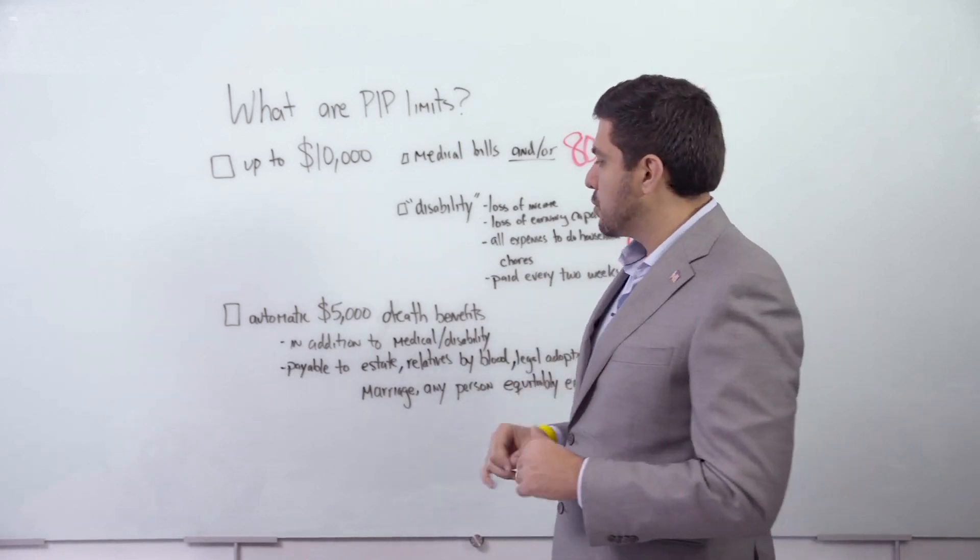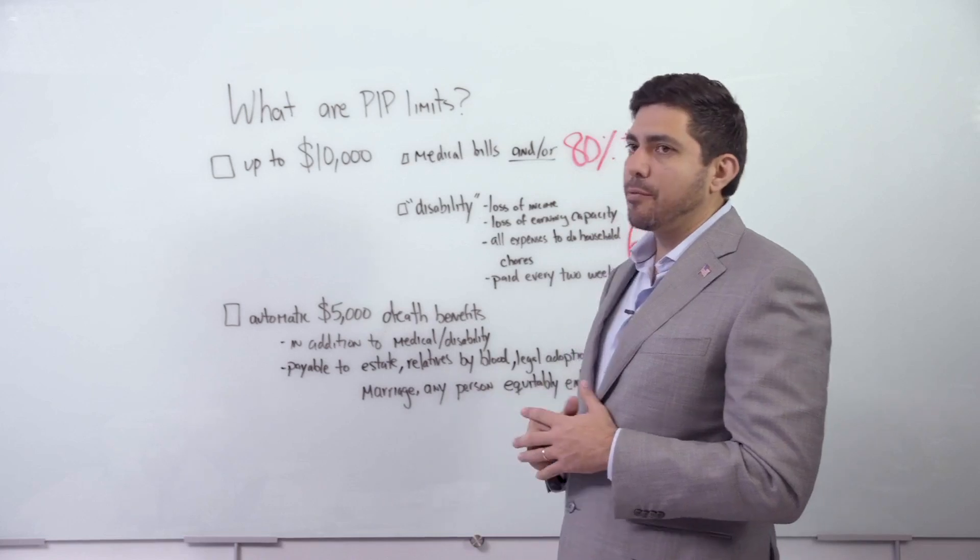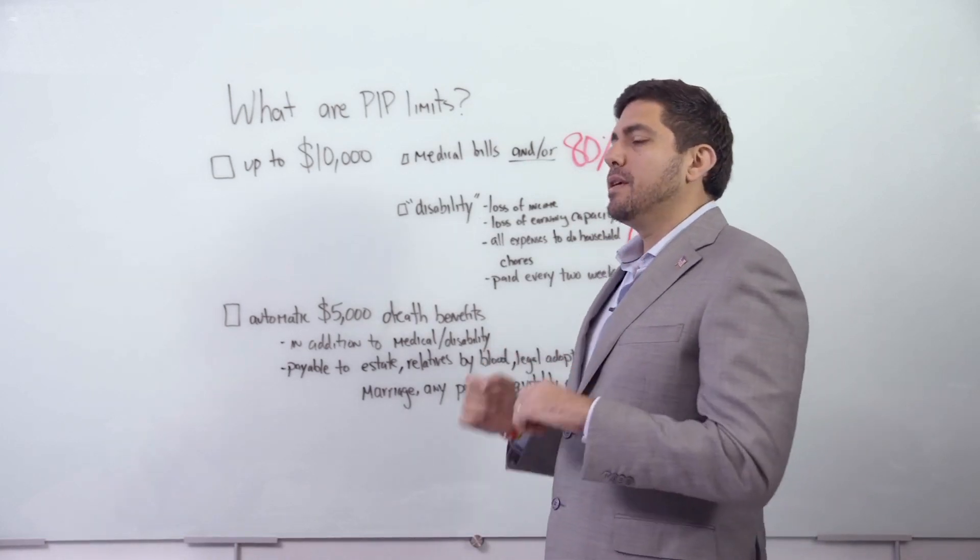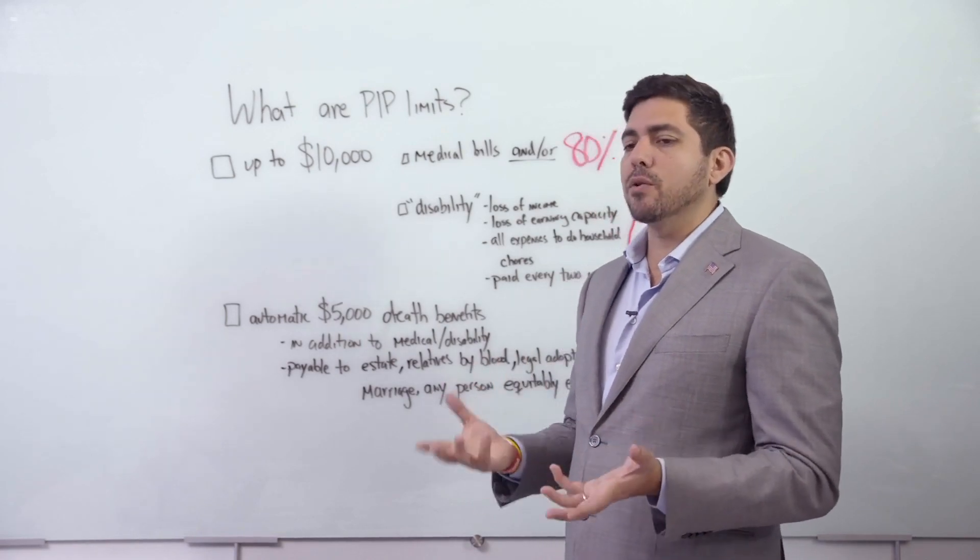Big, big important issue right here: automatically $5,000 in death benefits. If somebody dies in a car accident, people overlook the PIP benefits. Why? I don't know.